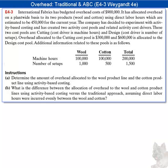International Fabrics has budgeted overhead cost of $900,000. It has allocated overhead on a plant-wide basis to its two products, wool and cotton, using direct labor hours, which are estimated to be $450,000 for the current year. The company has decided to experiment with activity-based costing and has created two activity cost pools and related activity cost drivers.